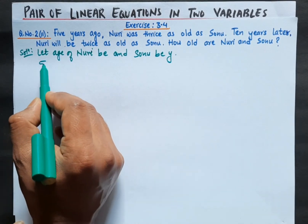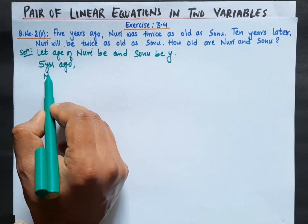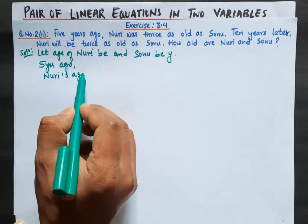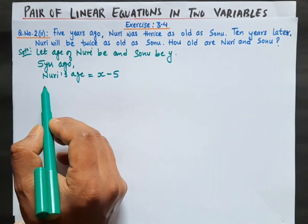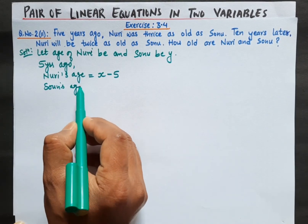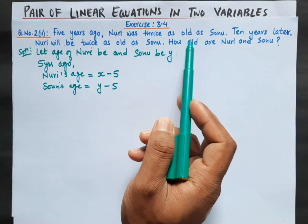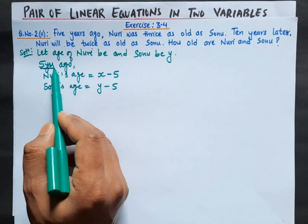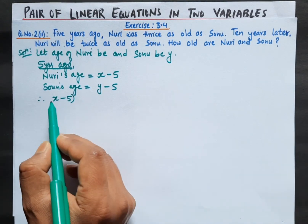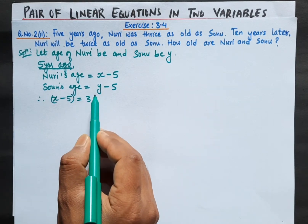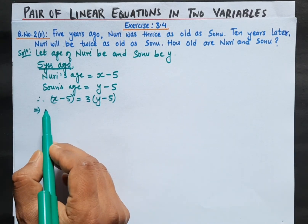Now for the first case: five years ago, the ages of Nuri and Sonu were compared. Five years ago, Nuri's age was x minus 5, and Sonu's age was y minus 5. According to the problem, Nuri was thrice — that is, 3 times — the age of Sonu. So Nuri's age equals 3 times Sonu's age: x minus 5 equals 3 into y minus 5.